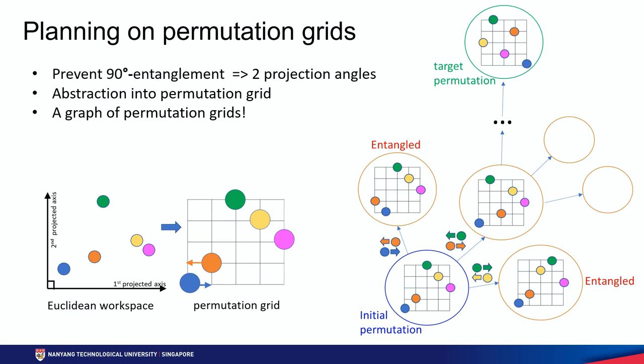The problem now becomes finding a set of crossing actions that lead to the target permutation from the initial permutation, under the condition of non-entanglement. To do this, we search in a graph of permutation grids, where each graph node is a permutation grid and an edge is a crossing action between adjacent robots. A node will be discarded immediately if its braid shows entanglement. Eventually, we can find a set of crossing actions which represents a feasible path topology to go from the initial configuration to the target configuration.